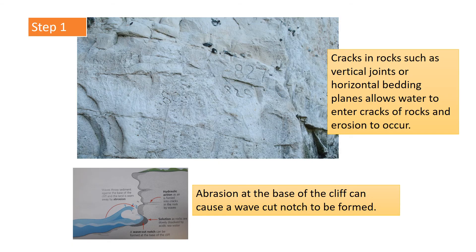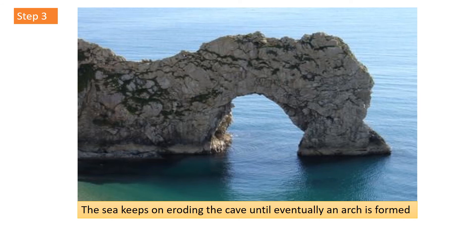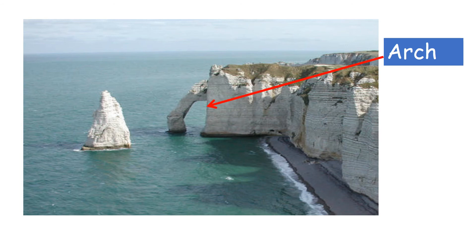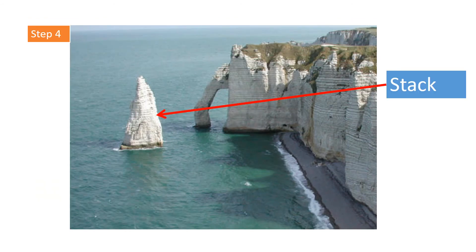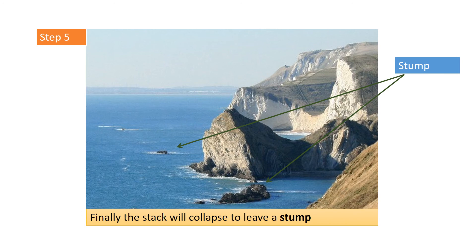Starting with the headland, cracks in the rock form and get widened by abrasion and hydraulic action. Eventually those cracks widen so much they form a cave. The sea continues eroding the cave, sometimes from both sides of the headland, until it erodes all the way through to form an arch. The base of the arch continues to be eroded, and eventually the roof of the arch collapses, leaving a stack. The stack itself is then undercut by hydraulic action and abrasion until it too collapses, leaving behind a stump. All the little rocks sticking out into the sea here are remnants of old stumps — at one point the headland would have extended all the way out to those points, showing how much erosion has taken place.